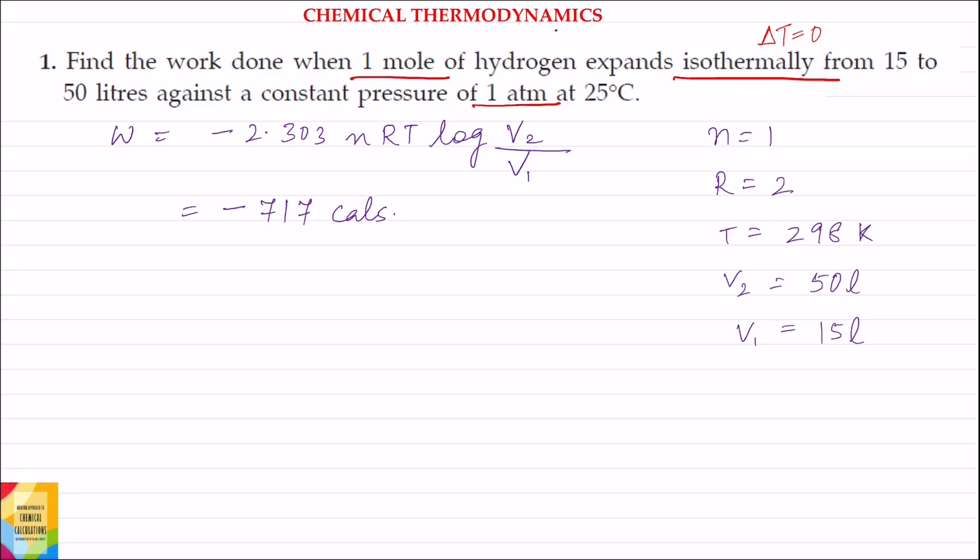Now initial volume is 15 liters and final volume is 50 liters. Formula is W equals minus 2.303 nRT log V2 by V1. This is isothermal expansion, means work is done by the gas.